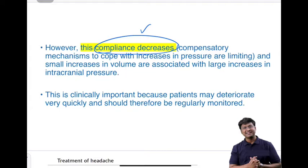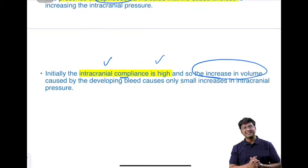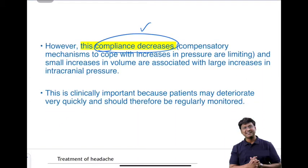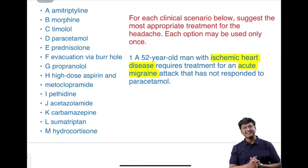This patient had a fall three weeks ago. The initial bleed was accommodated due to high intracranial compliance in the early stages. As bleeding continues, compliance decreases, and even a small increase in volume causes a large rise in intracranial pressure. That is why the patient is presenting after three weeks — this is subdural hematoma.